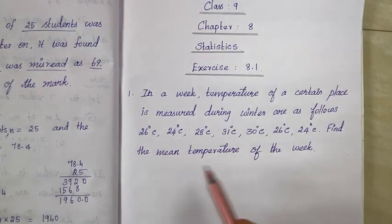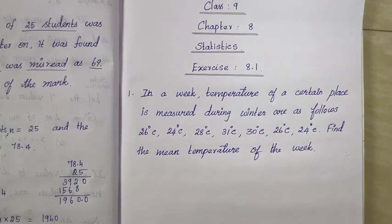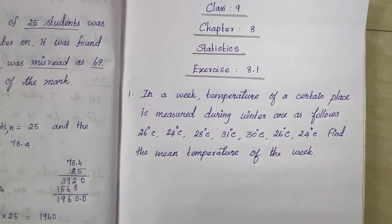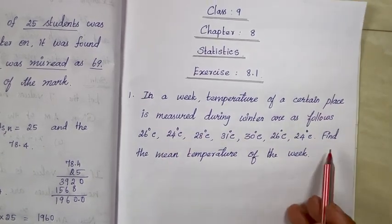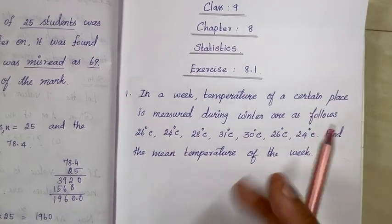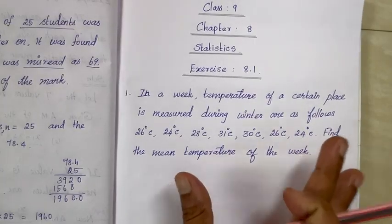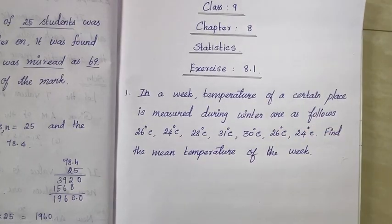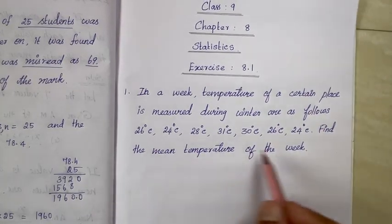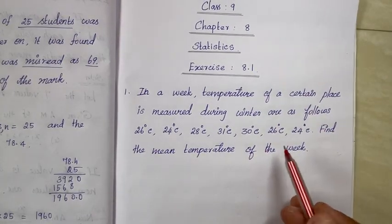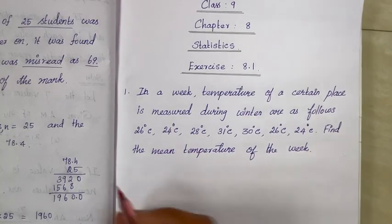You can see all the data that you can get in a particular place during winter season in a week. There are temperatures that you can get in a week. So, the mean is the sum of all observations divided by the number of observations.